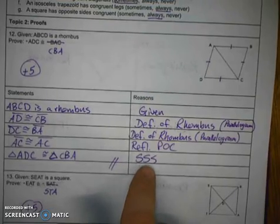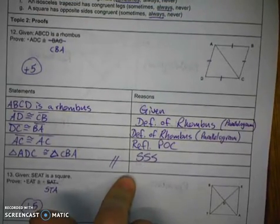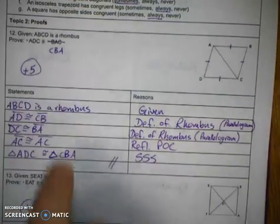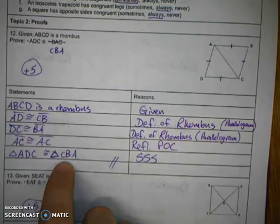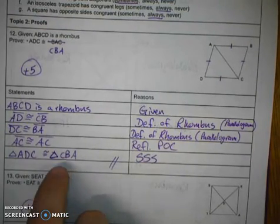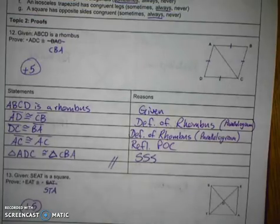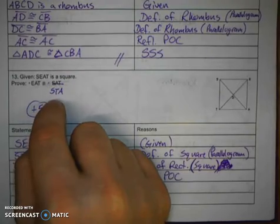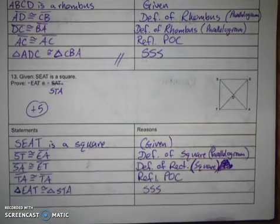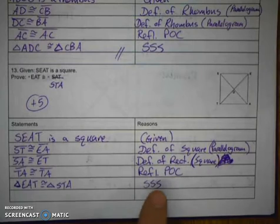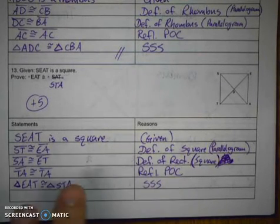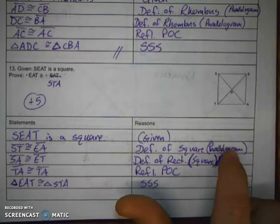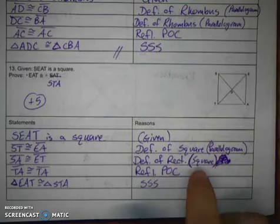Okay, so it should look something like this. I chose to use side, side, side. If you used a different method and you want to ask me about it before the test, go ahead and bring that to class and do that. This should be triangle CBA. And if you wrote it in the order it was printed, that's okay. But in order for corresponding parts to match up, we have to call it triangle CBA. And same kind of thing on number 13. In order for corresponding parts to match up, we have to call the other triangle STA. But again, I use side, side, side on those. And so I use definitions of square and rectangle. You could have used parallelogram for this line and square for this line also.